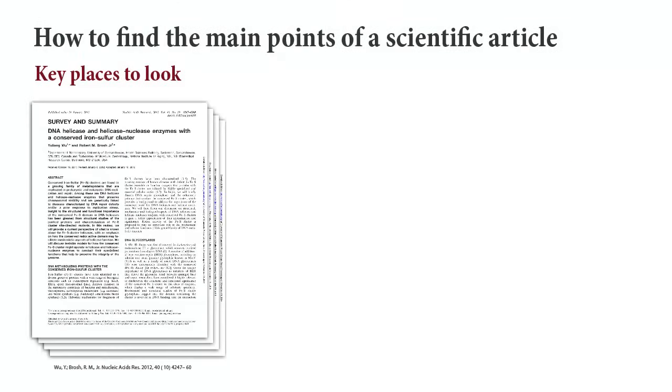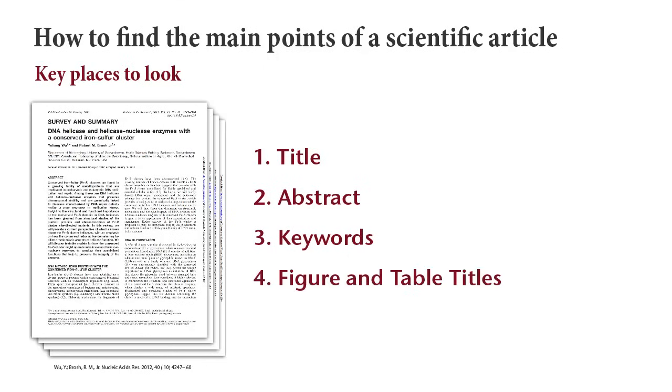While you are reading through the article, also distinguish the author's main points. It can be difficult to distinguish between the main point and less relevant sub-points. Key places to look for main points include the article's title, the abstract, keywords, the figure and table titles, and the first sentence or last couple of sentences in the introduction section.